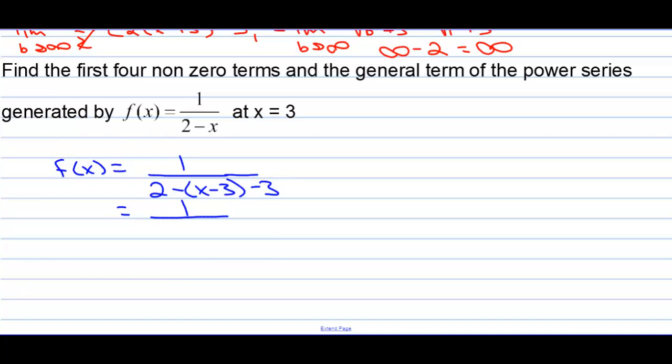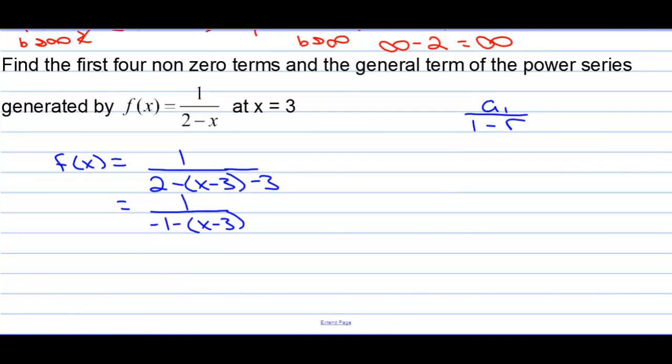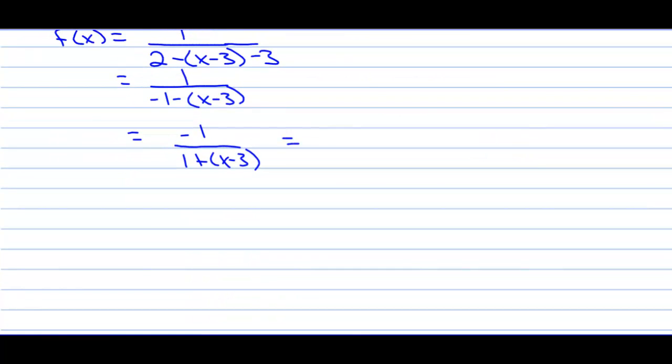That's going to be 1 over negative 1 minus x minus 3. Well, I need it to look like a geometric series of the power series. A sub 1 over 1 minus r. That's equal to, I need that negative 1 to be a 1. So we have negative 1 over 1 plus x minus 3, right? We just multiply the top and bottom by negative 1. That makes that bottom 1 a positive now. Then finally, we've kind of arrived where we want to be, negative 1 over 1 minus negative x minus 3. So now we have the a sub 1 over 1 minus the r. So a sub 1 is negative 1. The r is negative x minus 3.